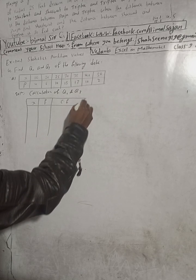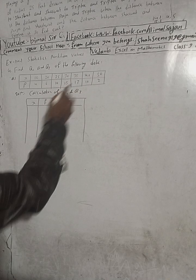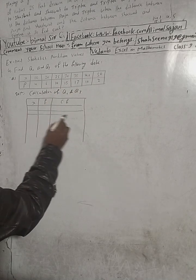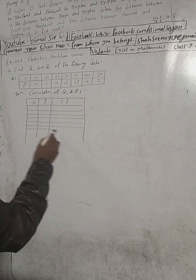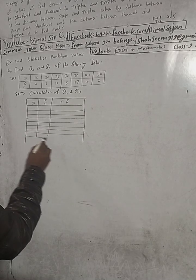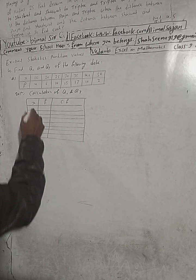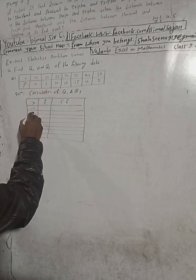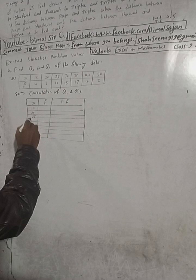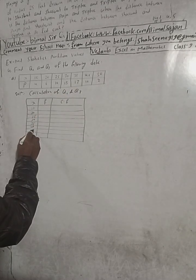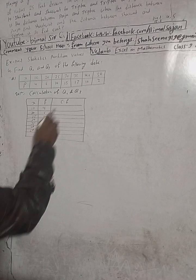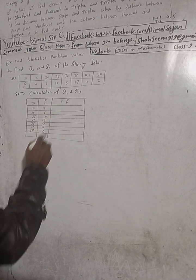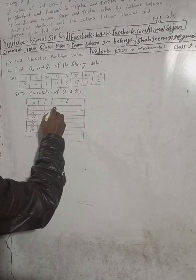There are seven data values, so make seven rows. The x values are: 10, 20, 25, 30, 35, 40, and 50. The corresponding frequencies are: 4, 6, 10, 15, 13, 10, and 2.